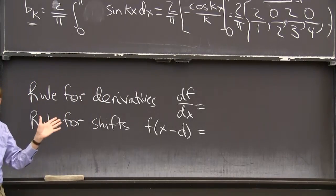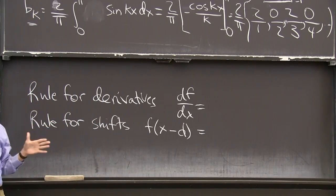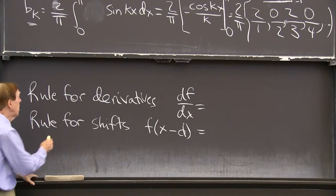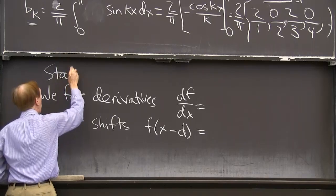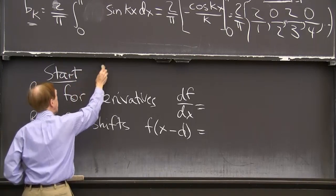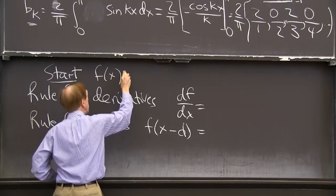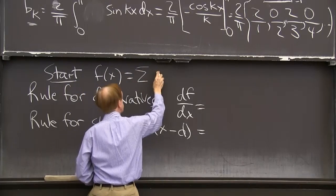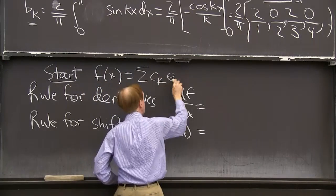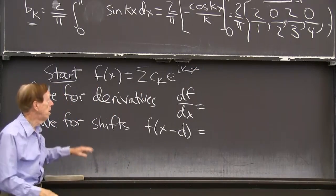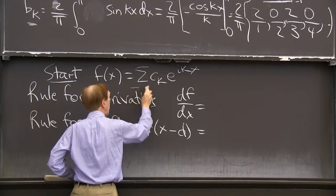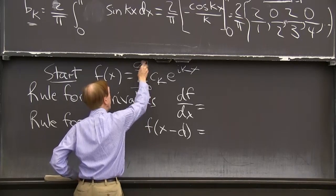That should do something nice to its Fourier coefficients. So I'm starting with, oh, I haven't given you any practice with the complex case. This would be a good time. Suppose start is f of x equals the sum of c_k, the complex coefficient, e to the ikx, the complex exponential.